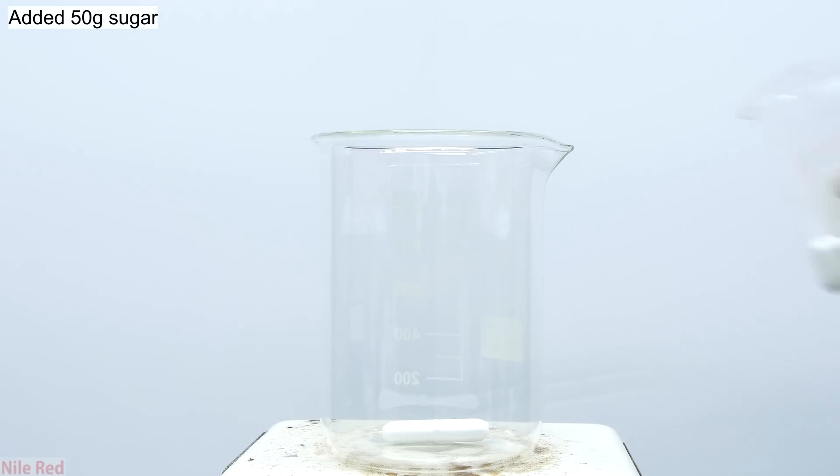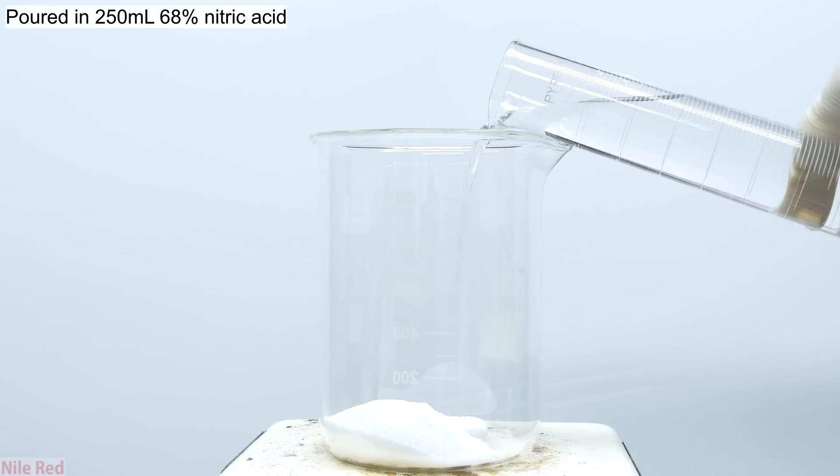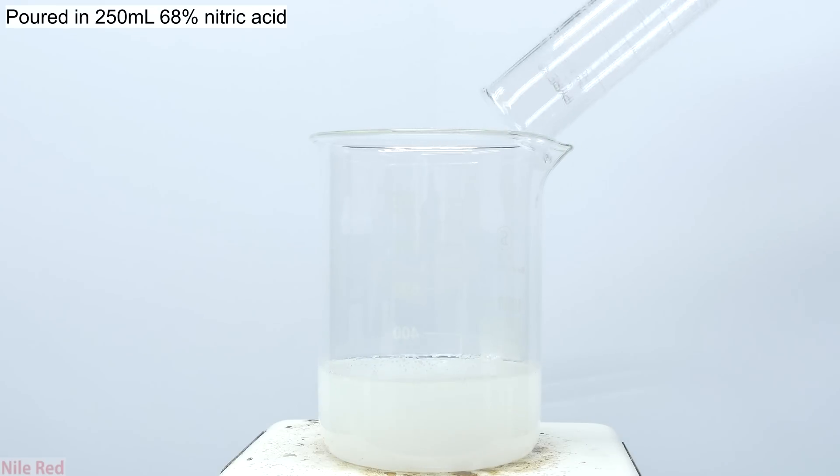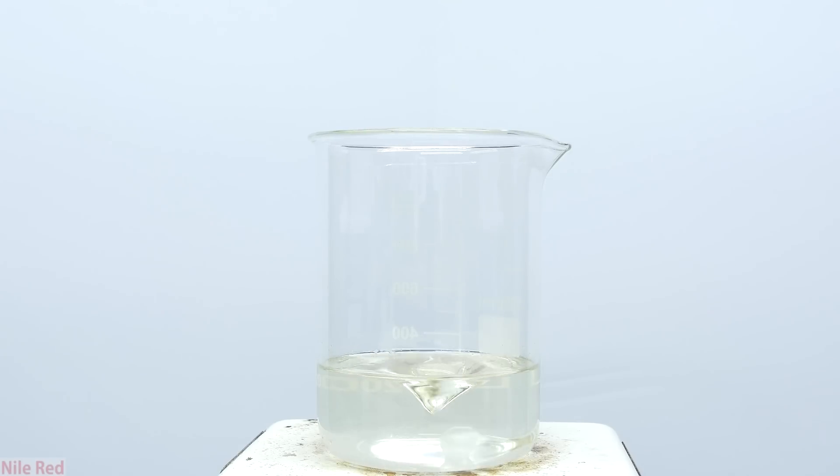I start off by adding about 50 grams of sugar to a 1 liter beaker that already has a stir bar in it. Directly to the sugar, I then pour in about 250 milliliters of concentrated nitric acid. I then turn on the stir plate and I let things mix until all of the sugar has fully dissolved.